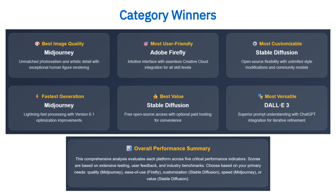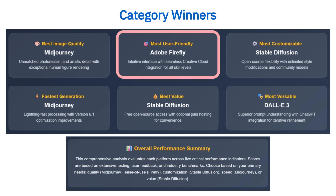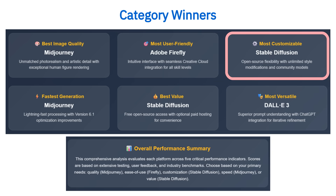Let's break down the standout winners in each category. First up, Midjourney takes best image quality, thanks to its unmatched photo realism and artistic depth, especially when rendering human figures with lifelike precision. Next, Adobe Firefly earns the title of most user-friendly — its intuitive interface and seamless Creative Cloud integration make it a perfect fit for creators at any skill level. Over to customization, Stable Diffusion is the clear leader — as an open-source platform with unlimited style tweaks and a thriving community, it's the ultimate choice for those who demand total creative control.